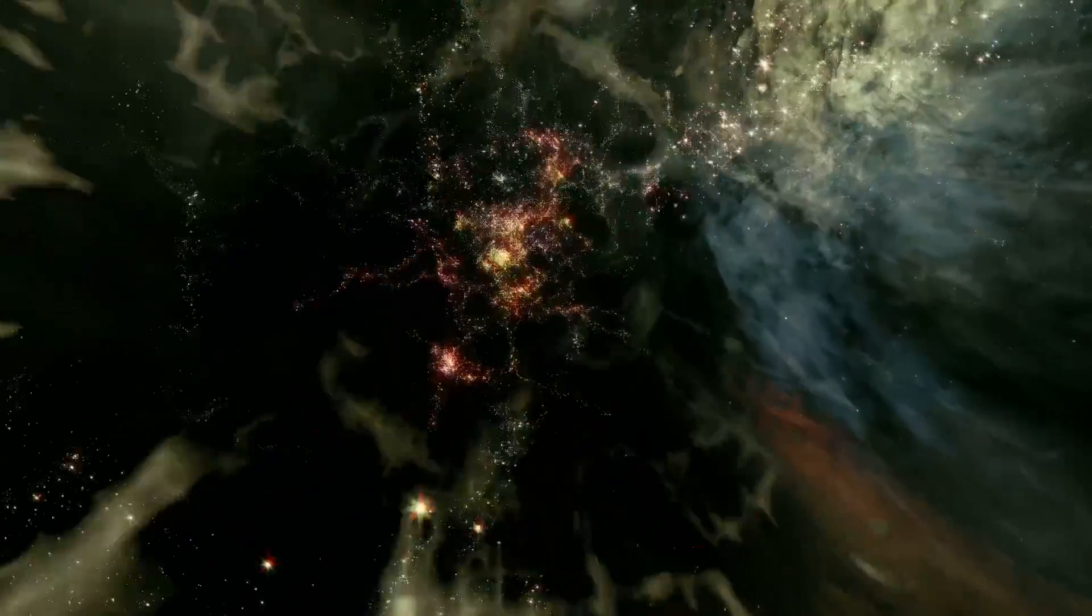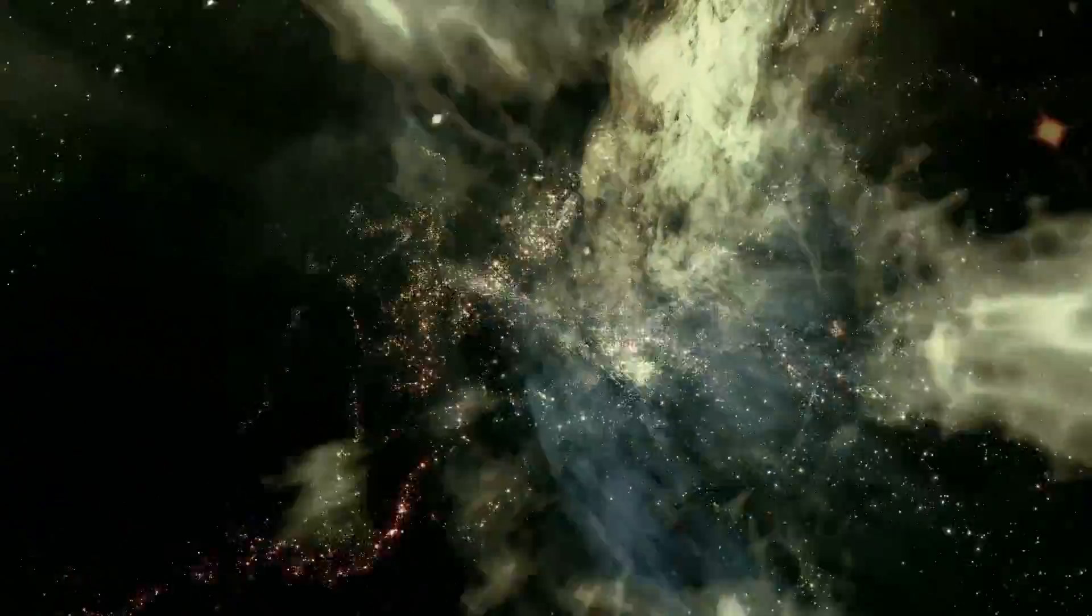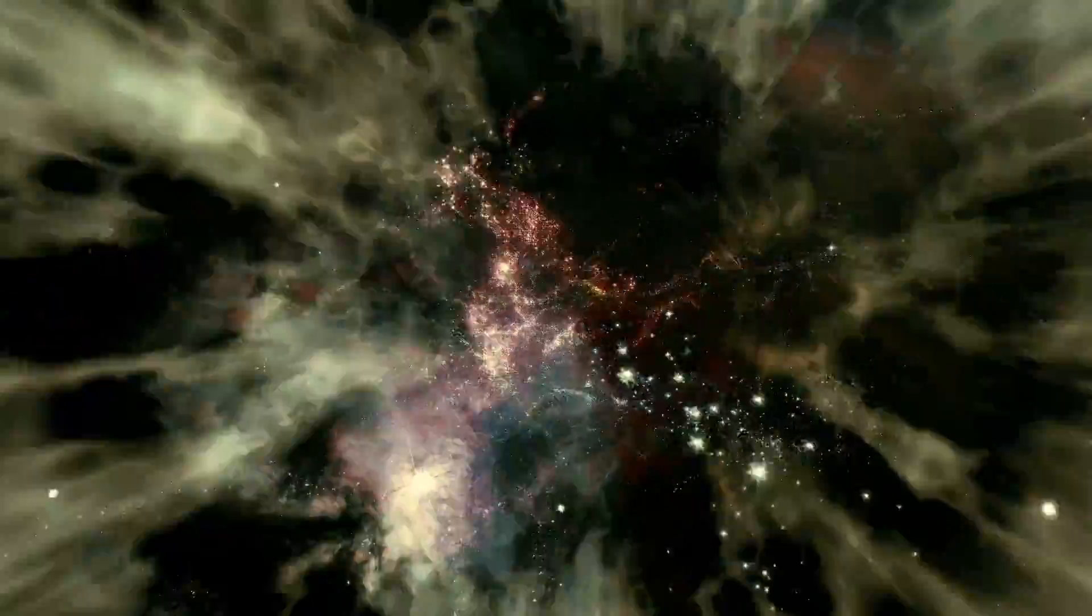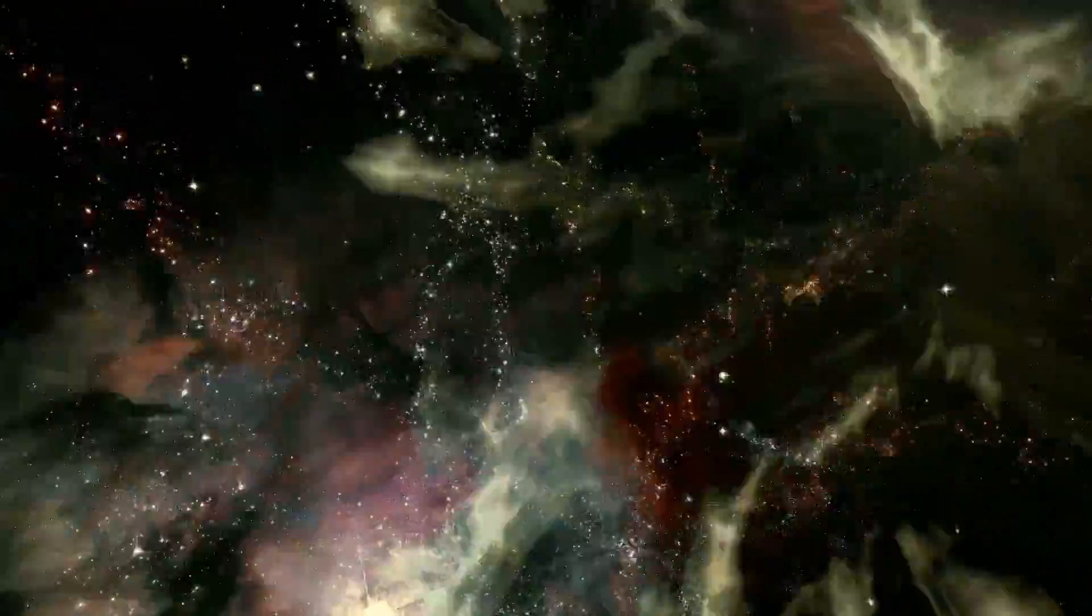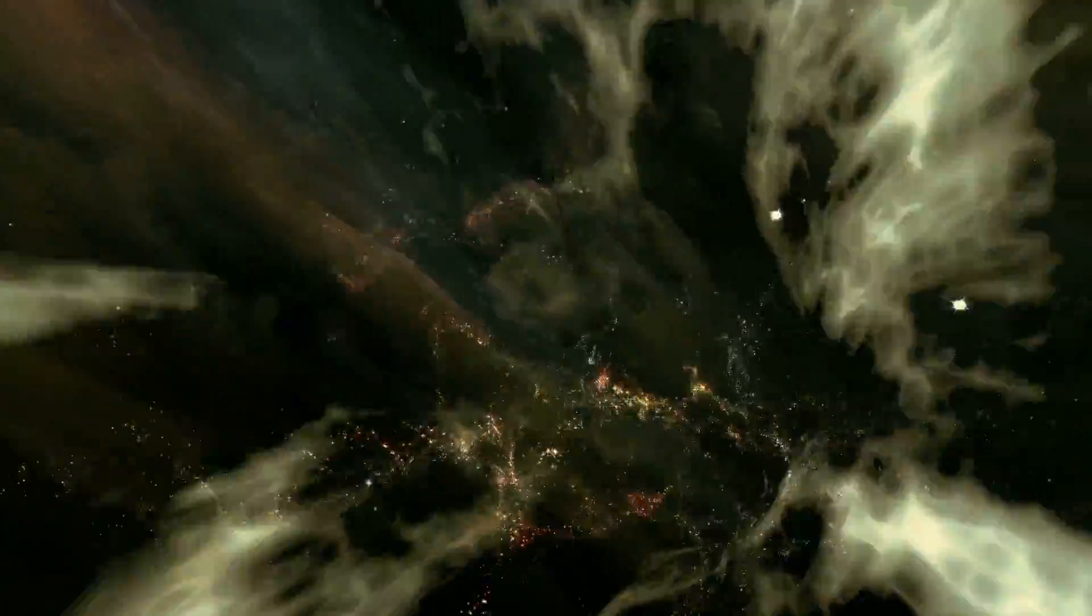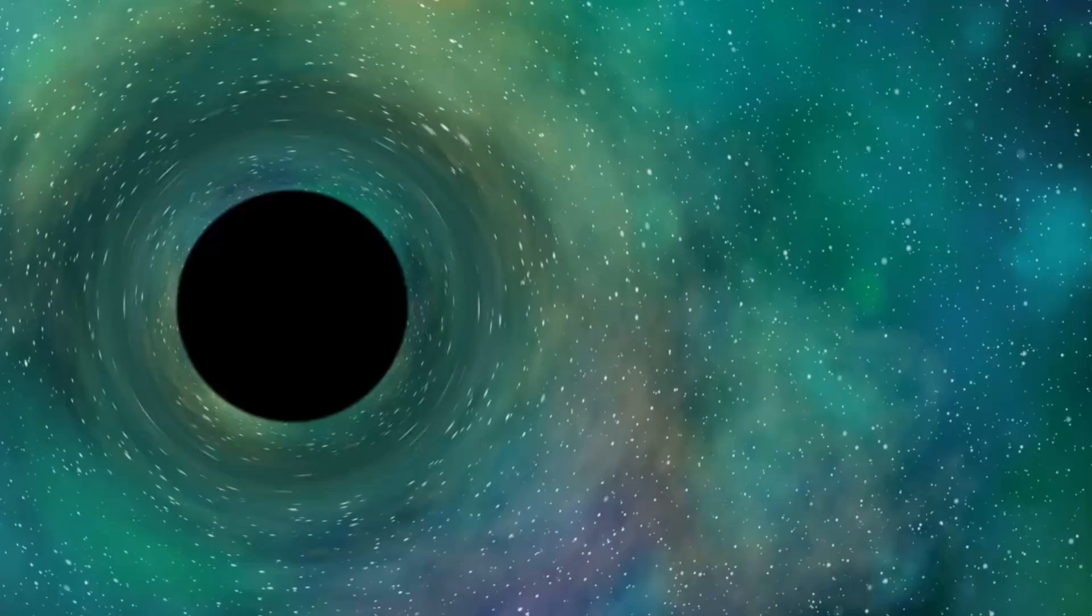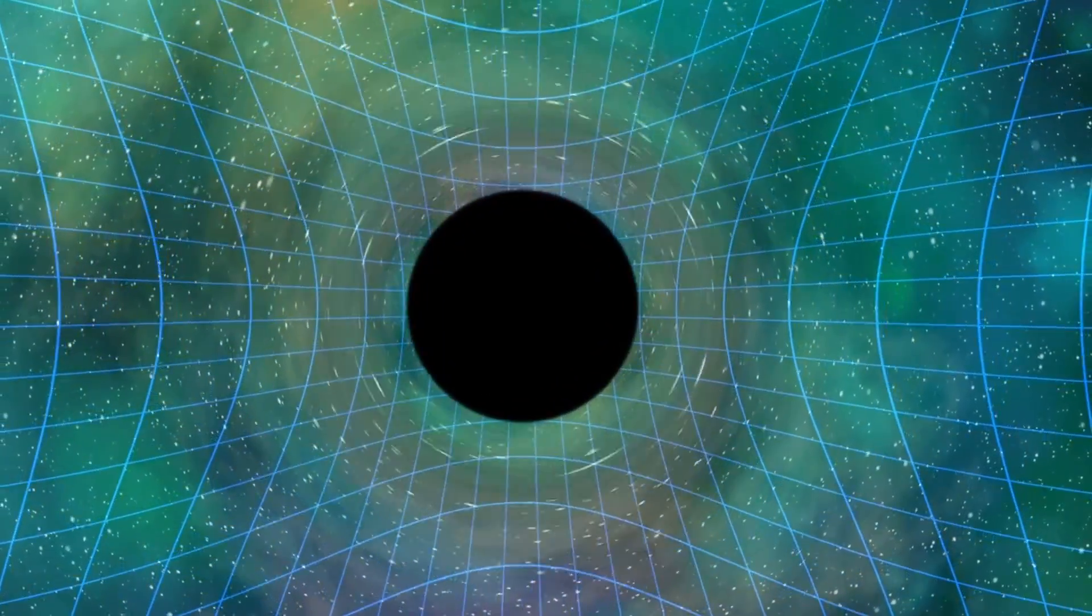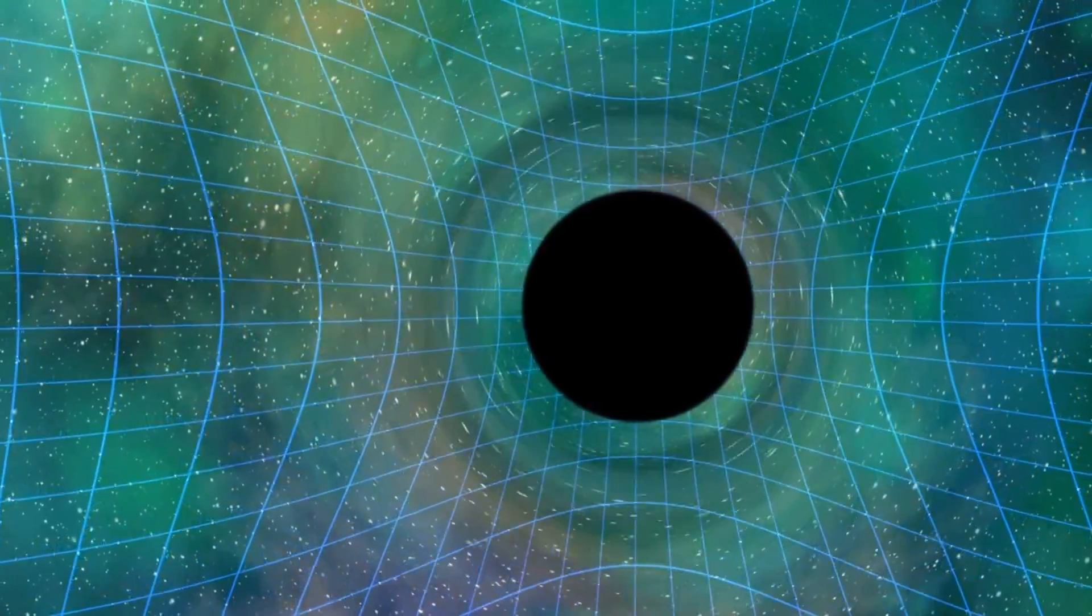Before we understand what white holes are, let's see what exactly black holes do. Black holes are points in space with so much gravity that all matter is sucked in and can't escape, so far as we can see anyway. Light, the fastest observable thing in the universe, isn't fast enough to escape the clutches of a black hole. We can't actually see these black holes, but we can see the areas where light dies around them and no longer escapes.